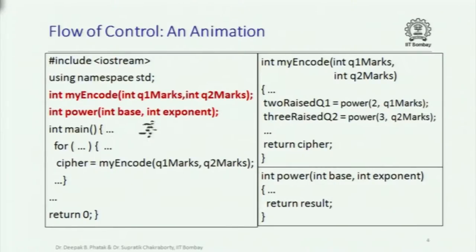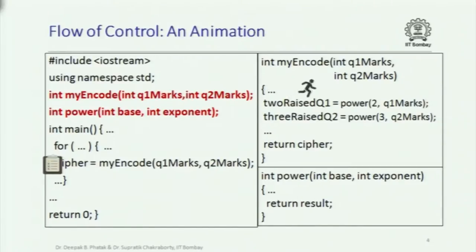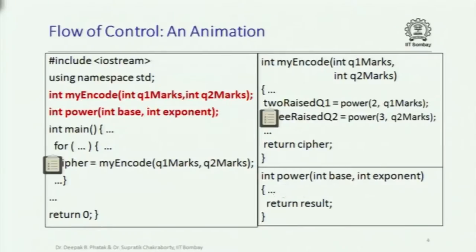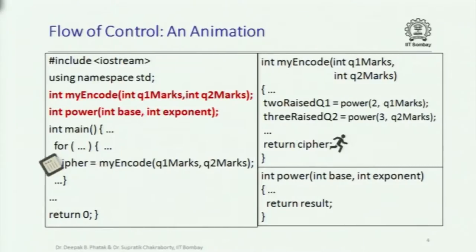There is an animation of the flow of control which shows that when you encounter a function call, some additional bookkeeping happens. This is the activation record that gets pushed onto the stack. As you execute instructions and encounter the next function call, again bookkeeping happens and you go to that function. When returning, you look at the bookkeeping information to find where to go back, start executing from there, and whenever you execute a return, you consult the bookkeeping information to figure out where you are coming back to.